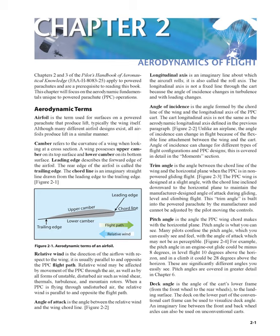Relative wind is the direction of the airflow with respect to the wing. It is usually parallel to and opposite the PPC flight path. Relative wind may be affected by movement of the PPC through the air, as well as by all forms of unstable, disturbed air such as wind shear, thermals, turbulence, and mountain rotors. When a PPC is flying through undisturbed air, the relative wind is parallel to and opposite the flight path.